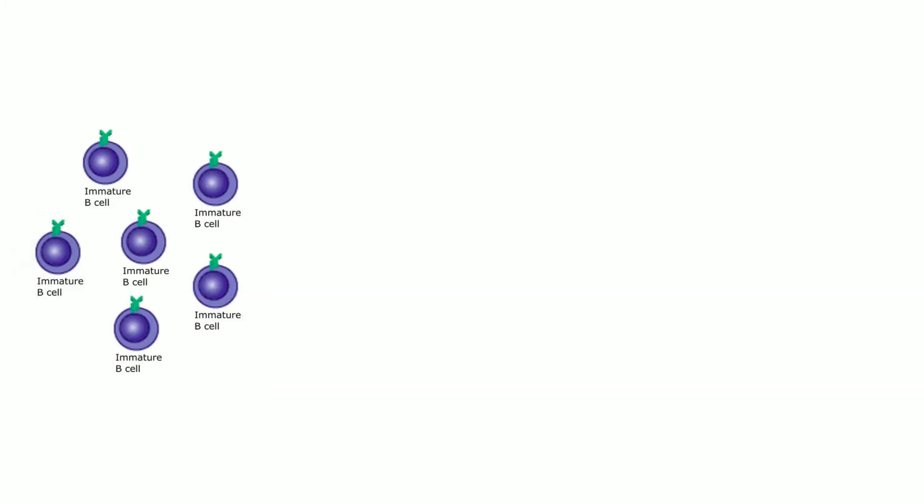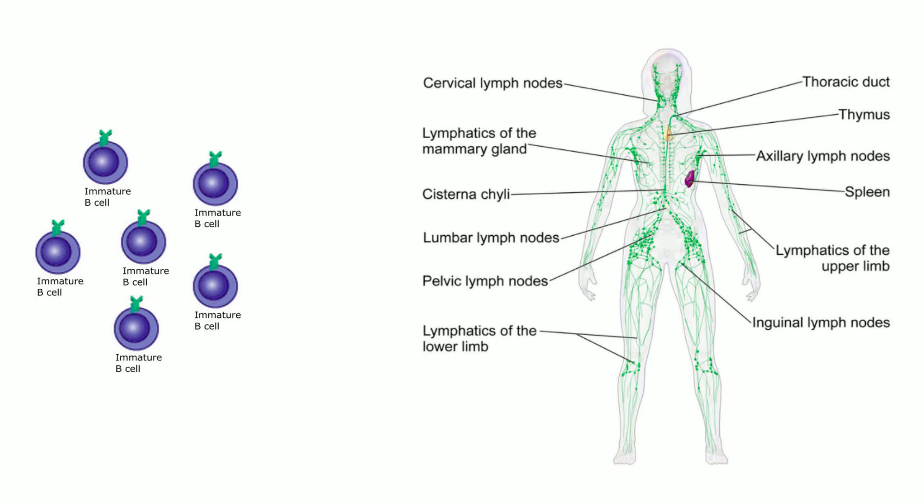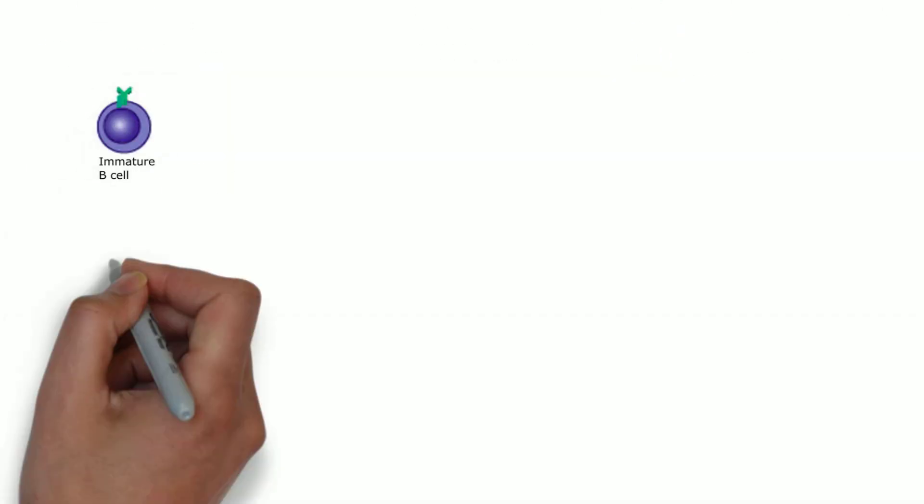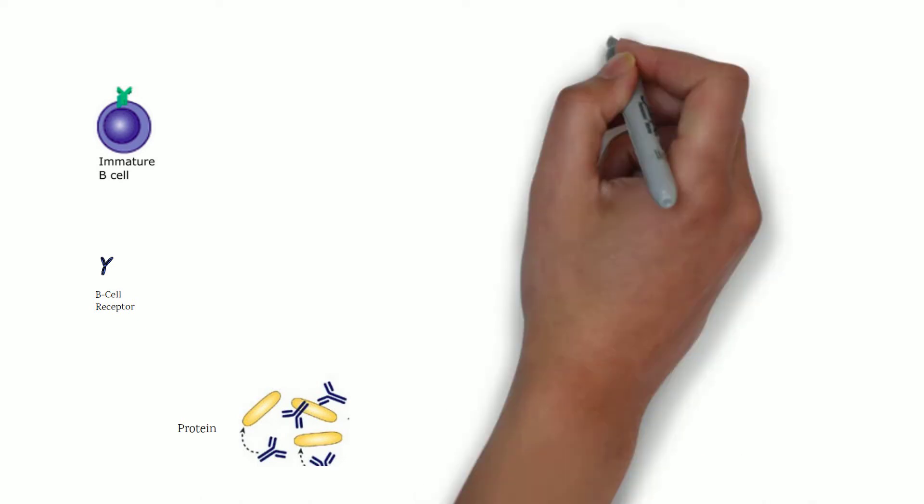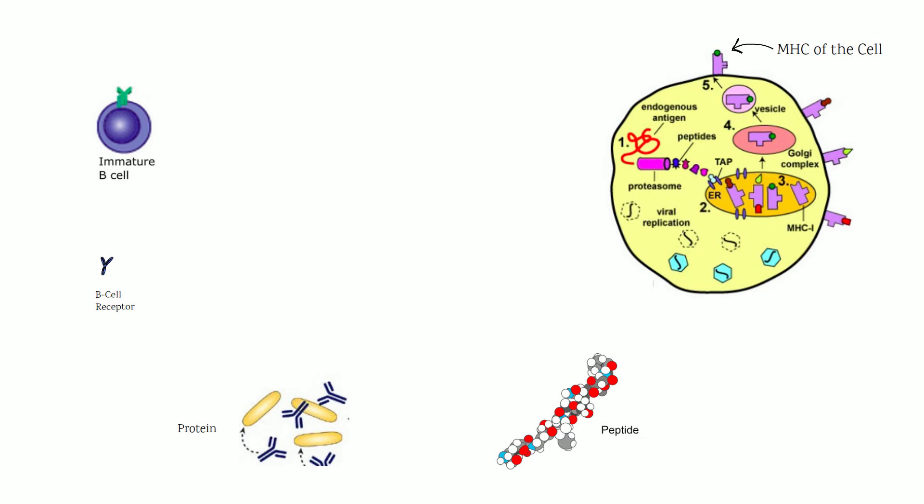These immature B cells circulate through secondary lymphoid organs like lymph nodes, spleen, mucosa lining, and even tonsils in search of a specific microbial molecule or antigen. Here I'm talking about non-self antigen, since our body also makes antigen called self-antigen. If the B cell receptor finds a protein antigen, the B cell engulfs it and the processed peptide is presented on the MHC of the B cell.